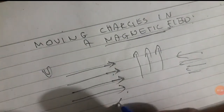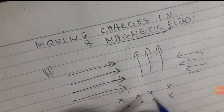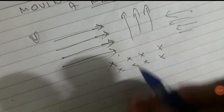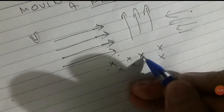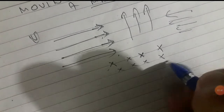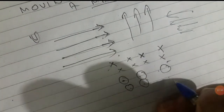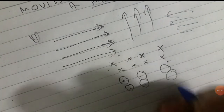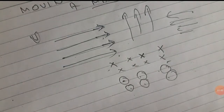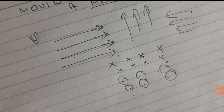I am going to call this the cross notation. The cross is like a tree — it means that if you see a cross, it represents the field going into the page. Similarly, the dot represents the field coming out of the page. This represents the magnetic field direction.